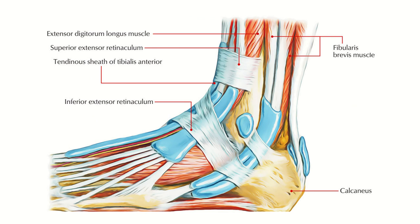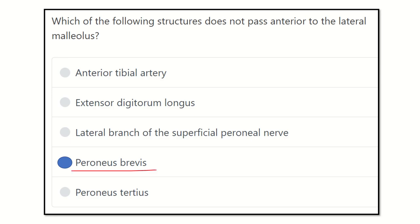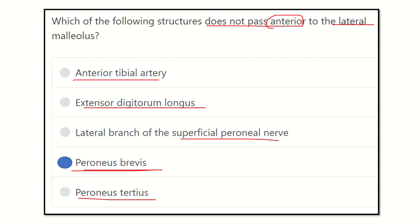This picture also confirms that behind the lateral malleolus there is peroneus longus and peroneus brevis, and anterior to the lateral malleolus there are different tendons such as tibialis anterior, extensor digitorum longus, and extensor hallucis longus. So our final answer is peroneus brevis, because peroneus brevis does not pass anterior to the lateral malleolus — peroneus brevis and peroneus longus are located posterior to the lateral malleolus of the fibula. All other options — anterior tibial artery, extensor digitorum longus, superficial peroneal nerve, and peroneus tertius — are anterior to the lateral malleolus.